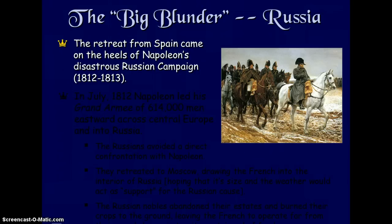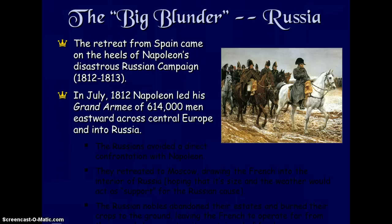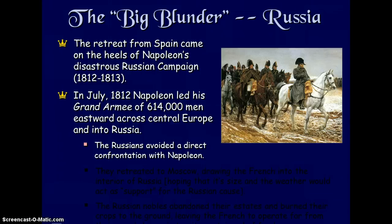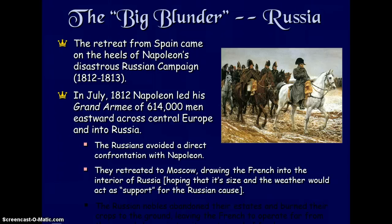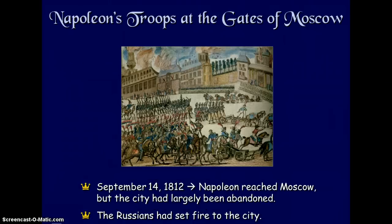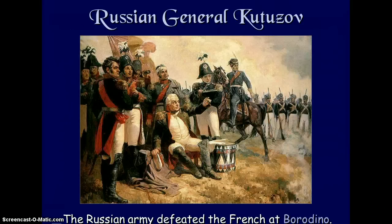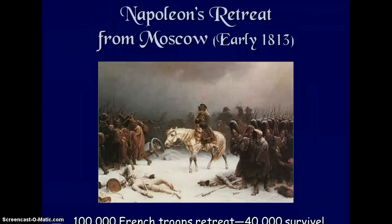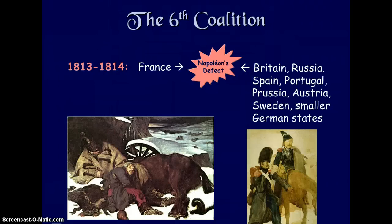The big blunder was Napoleon's disastrous Russian campaign. In July 1812, Napoleon led his grand army of 614,000 men eastward into Russia. Russia avoided direct confrontation, retreating to Moscow and drawing the French into Russia's interior. Russian nobles abandoned their estates and burned their crops, leaving French troops without food. When Napoleon reached Moscow, he found the city set on fire. The French Army was defeated at Borodino, and of those who retreated, only 40,000 of 100,000 survived.